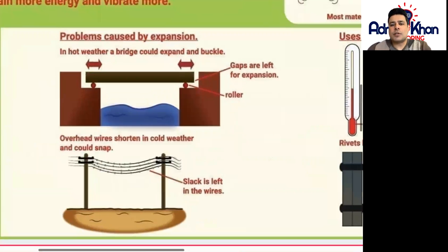Problems that are caused by expansion. This is an example of a bridge. In hot weather, a bridge could expand and it could buckle. When the bridges are actually made or placed where they're supposed to be by engineers, certain gaps are left on the sides for the bridge to expand. If it heats up and expands it will buckle which means there's a good chance that the bridge will get damaged. The rollers at the bottom help the bridge to expand and there are some gaps here that the engineers leave at the end of the bridge so that there's room for the bridge to actually expand.